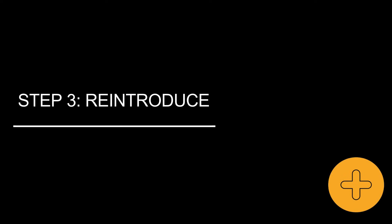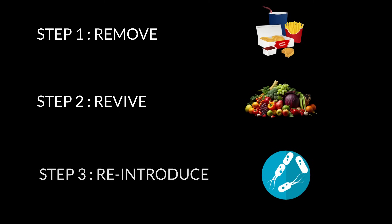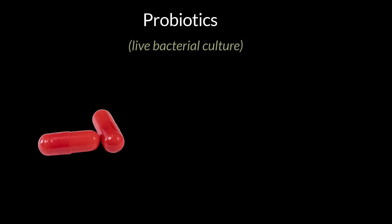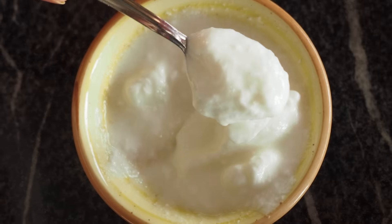Step number three is reintroduce. Once you have eliminated ultra-processed, deep-fried and packaged foods, and helped revive the diversity of gut microbes with a variety of plant-based foods, it is time to reintroduce good bacterial strains back into your gut. This can be done using probiotic cultures available as supplements, or by incorporating probiotic-rich foods like curd, kanji, kimchi and sauerkraut. Not all bacterial strains will be able to colonize the gut — some will pass through, some will transiently colonize, and only a few will establish long-term colonization. It is recommended to consume probiotic foods continuously for at least three to six months to see their true benefits.